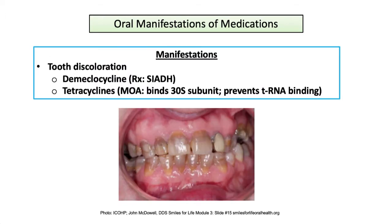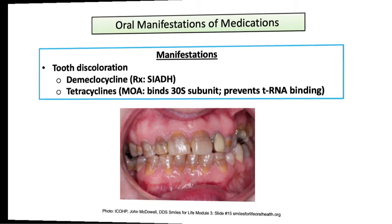Tooth discoloration can occur with demeclocycline, an ADH antagonist used to treat SIADH, and the tetracycline class of antibiotics. Tooth discoloration may be manifested in the fetus if used during pregnancy and is irreversible for children if consumed under the age of 8.